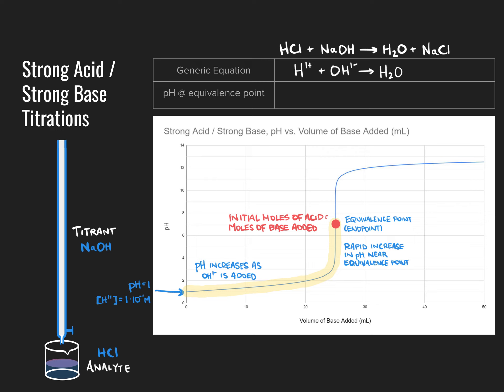For a strong acid-strong base titration, it makes logical sense that the pH would be 7 at the equivalence point because the species present are water, sodium ions, and chloride ions. The sodium ion is the conjugate acid of a very strong base and is thus a very weak acid; the chloride ion is the conjugate base of hydrochloric acid and is therefore a very weak base. Neither has appreciable acidic or basic properties, so the pH equals that of pure water: 7.